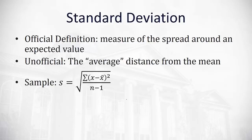If we're talking about a sample, the way we calculate the sample standard deviation represented by lowercase s is we take the square root of the sum of the square of the differences between each data value and the mean divided by the sample size minus 1.